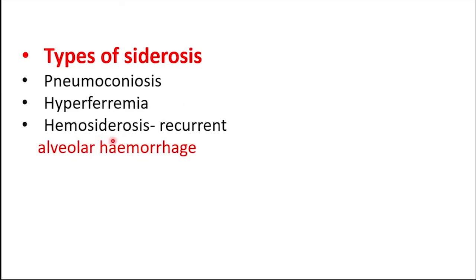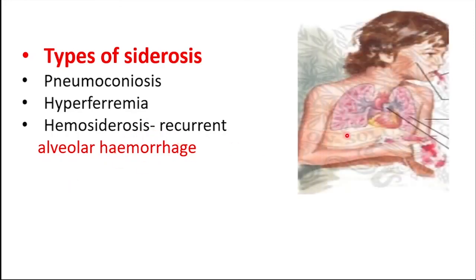An important condition related to Siderosis is Hemosiderosis. It is the term used to describe an overload of iron in our organs and tissues. About 70% of iron in our body is found in RBCs, in the hemoglobin. When RBCs die, they release that iron which becomes hemosiderin. That hemosiderin protein stores iron in our body's tissues. Excessive accumulation of hemosiderin in tissues causes Hemosiderosis. It causes bleeding within the organs and recurrent alveolar hemorrhage. Bleeding from the alveoli is the main symptom of Siderosis.